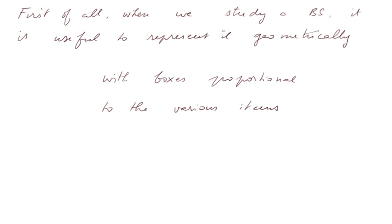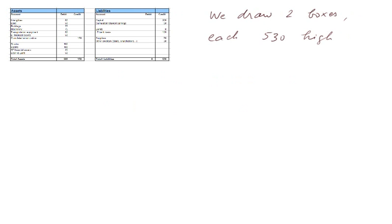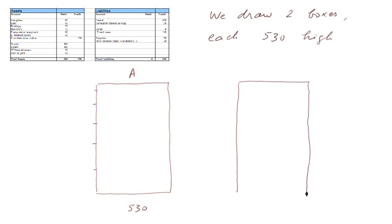First of all, when we study a balance sheet, it is useful to represent it geometrically, with boxes proportional to the various items. So, let's do it with our balance sheet. We draw two boxes of 530 height each. So, we have to choose a scale, which will be something like this. This will be for the asset side, and a similar box of the same height for the liabilities, it will also have the height 530.